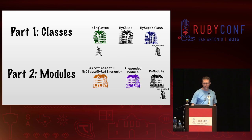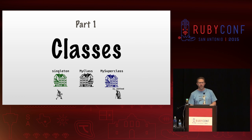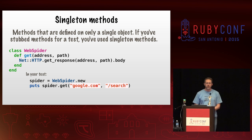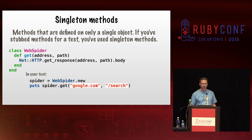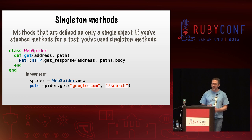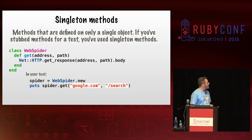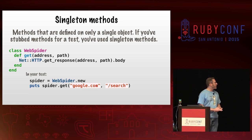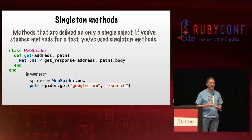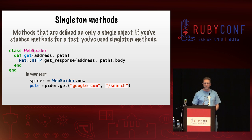The second part is all about modules. For the classes part, we're going to start in a slightly unusual place: singleton methods. Those are methods that are defined on only a single object. If you've ever stubbed methods out for a test, you've used singleton methods. For example, we've got a web spider class here that sends out an actual HTTP GET request across the network and returns whatever HTML it gets back from the remote server.